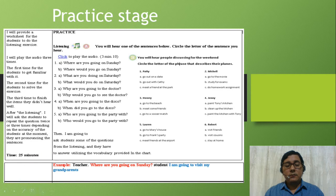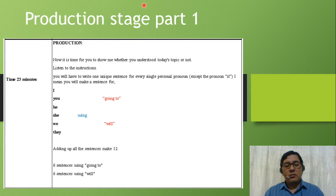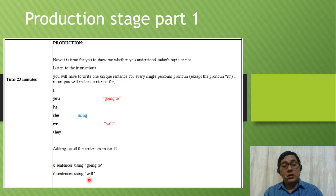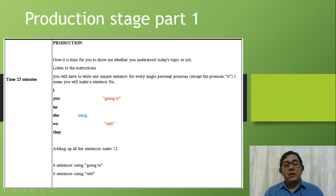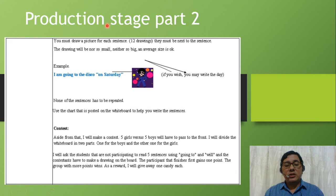Here starts the production stage, part one. I will instruct the students to write one sentence for each personal pronoun except it. They will have to write six sentences using going to and six sentences using will. And once again, I will explain the steps that they need to follow in order to write their plans.